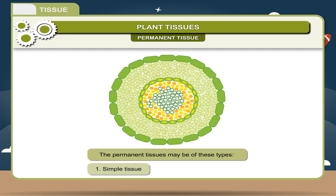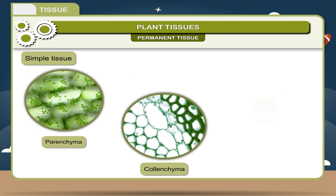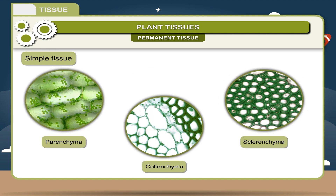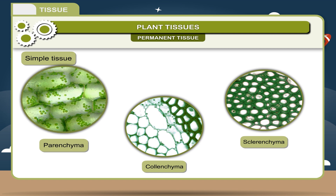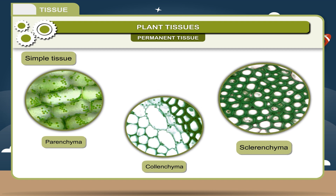The permanent tissues may be of these types: 1. Simple tissue. 2. Complex tissue. Simple tissue is made up of one type of cells that are similar structurally and functionally. These are of three types: parenchyma, colenchyma, and sclerenchyma.